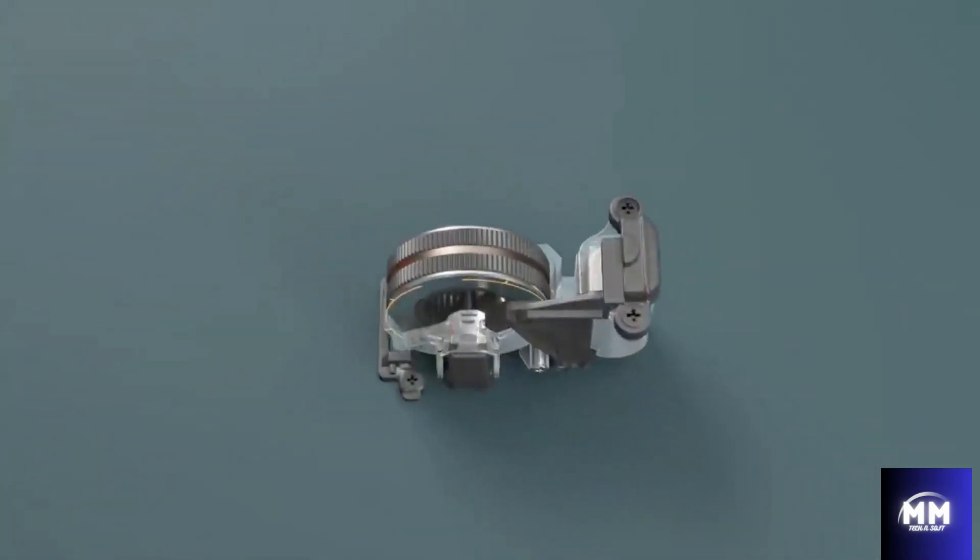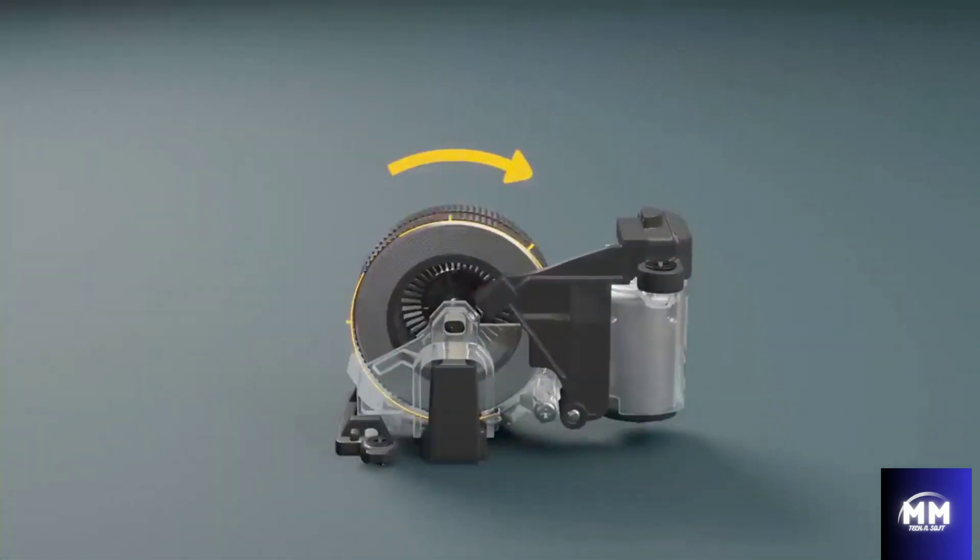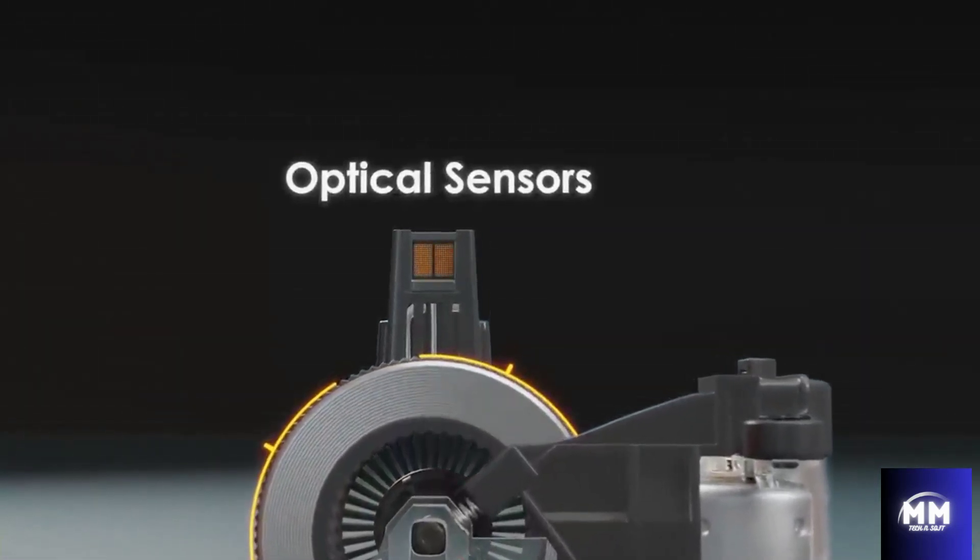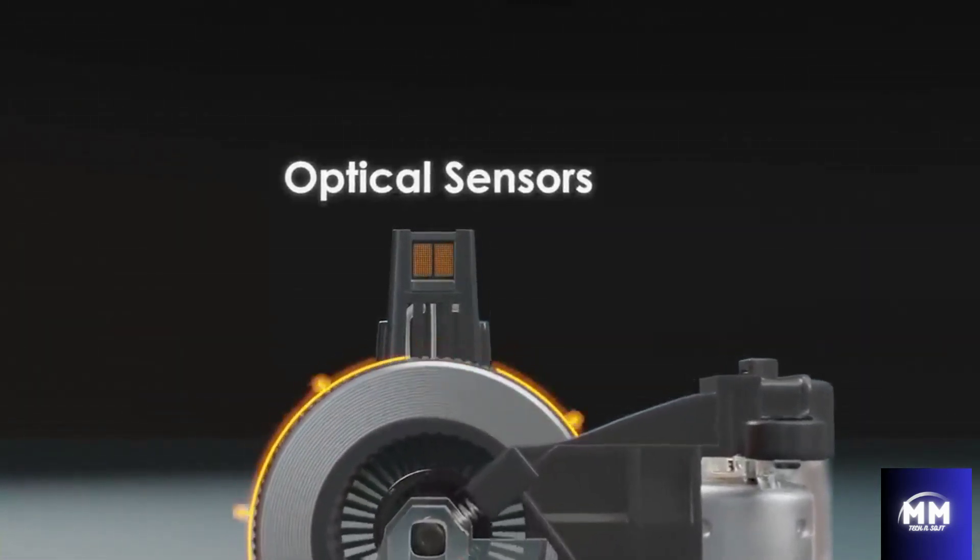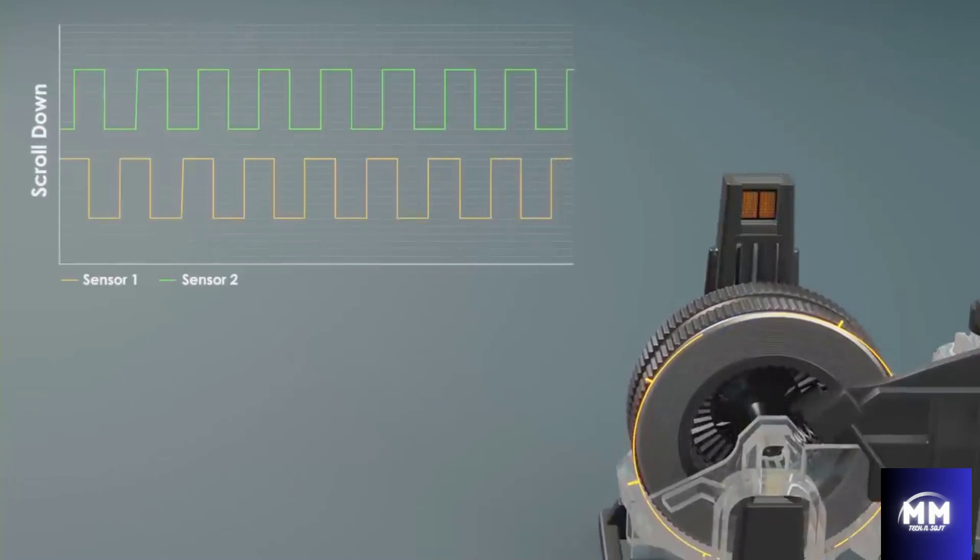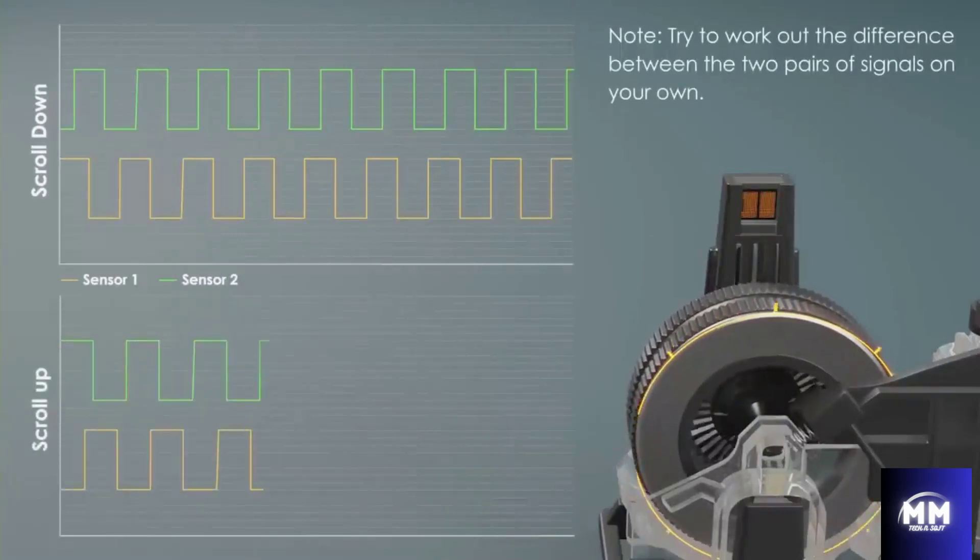But how does the scroll wheel know which direction it's rotating? Well, the two sensors are spaced next to one another, and depending on the direction the wheel is rotating, one sensor sees the light before the other. For example, if you scroll the wheel down, the pulse train from the two adjacent sensors will look like this, whereas when you scroll the wheel up, it will look like this.